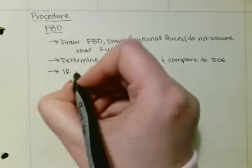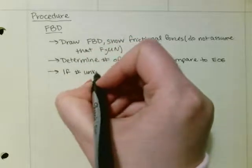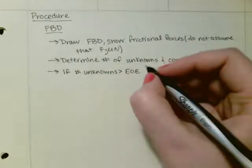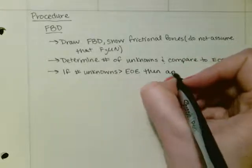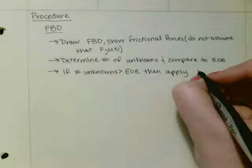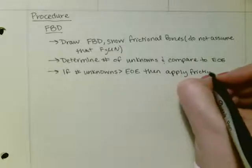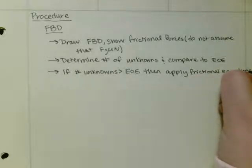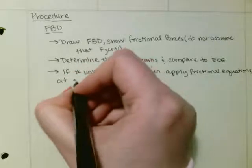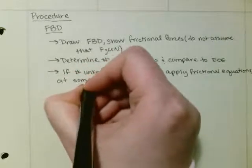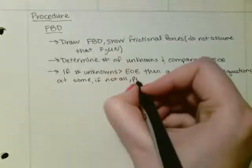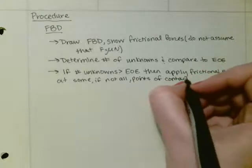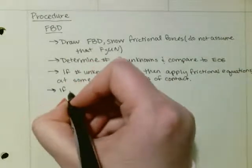And then if the number of unknowns is greater than the equations of equilibrium, then apply the frictional equations at some, if not at all, points of contact.